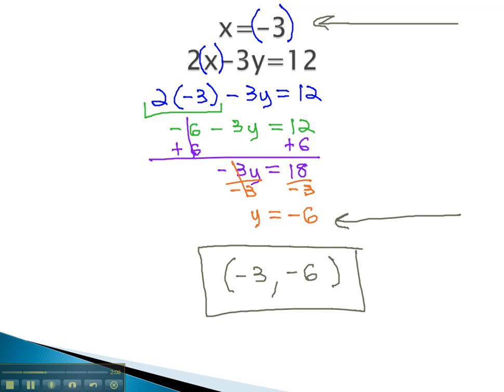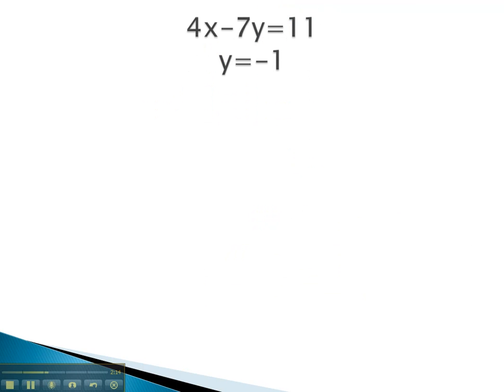Let's take a look at another example, where we have to find the x and y that make both equations true. In this equation, we're told that y equals negative 1. This means in the other equation, that y must still be negative 1, so we will replace it with negative 1. We have 4x minus 7 times y, which is now times negative 1, equals 11.